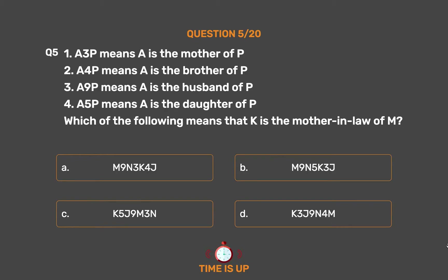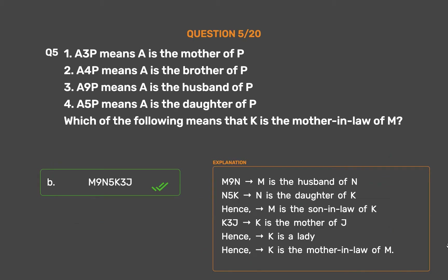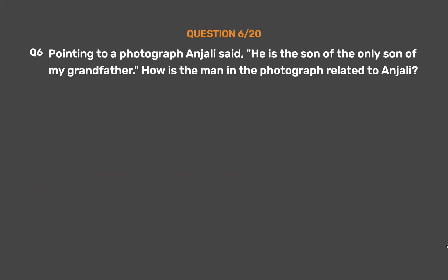The correct answer is Option B: M9N5K3J. M9N means M is the husband of N. N5K means N is the daughter of K, hence M is the son-in-law of K. K3J means K is the mother of J, hence K is a lady. Therefore, K is the mother-in-law of M.